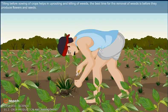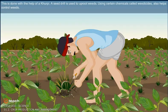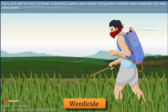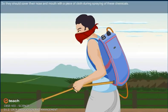Tilling before sowing of crops helps in uprooting and killing of weeds. The best time for removal of weeds is before they produce flowers and seeds. This is done with the help of a khurpi. A seed drill is also used to uproot weeds. Using certain chemicals called weedicides also controls weeds. These are sprayed in the fields to kill the weeds without damaging the crops. Spraying of weedicides may affect the health of farmers, so they should cover their nose and mouth with a piece of cloth during spraying.